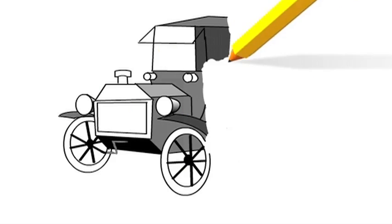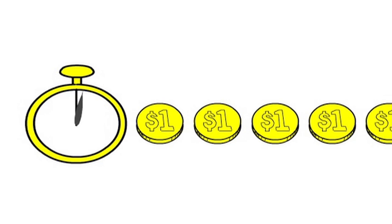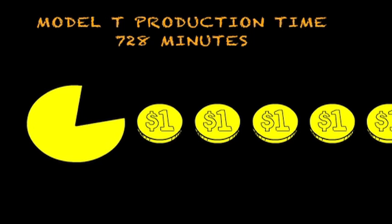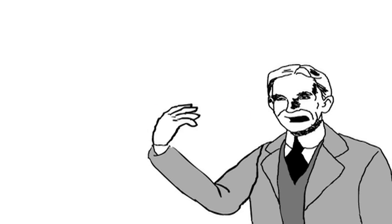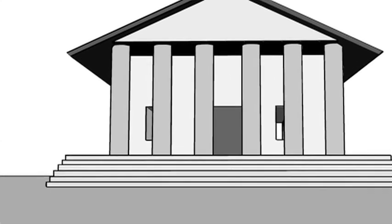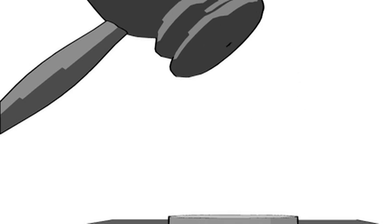But Ford would need more than a great car to make his new company exponentially profitable. After all, the first Model Ts took approximately 728 minutes to make. This drove up the cost of production, making the car less affordable. The price point was a hard pill to swallow for a man determined to bring the automobile to the masses. Ford's victory in court against George Selden's automobile patent eliminated royalty costs for early manufacturers. But he'd still need to lower his prices. And to do that, he'd need to make more cars in less time. Out of this necessity, the assembly line was born.